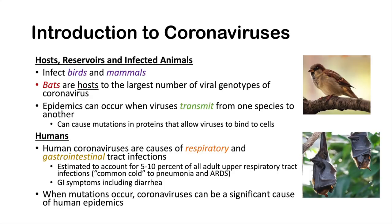When mutations occur, coronaviruses can become significant causes of human epidemics. As mentioned, these mutations can occur when a virus is transmitted from one species to another, or an entirely new coronavirus can emerge through these mutations. We have seen several instances recently where transmission from one species to another has led to a new virus and a new outbreak.